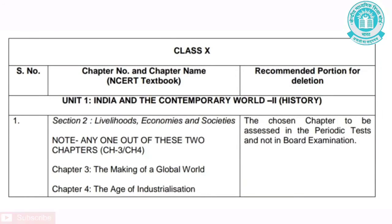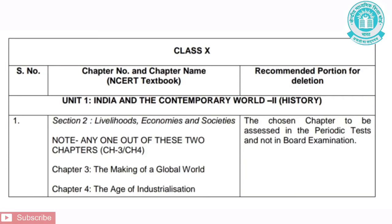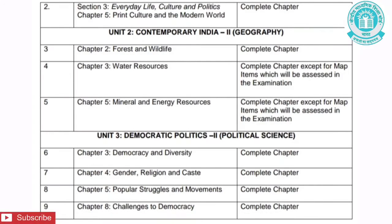The next subject is Social Science for Class 10. Unit 1 is India and the Contemporary World 2 — History. Section 2 is Livelihoods, Economies and Societies, which includes two chapters: The Making of a Global World, and The Age of Industrialisation. These chapters will be assessed in Periodic Tests only, not in the Board Examination. Section 3 is Everyday Life, Culture and Politics — Chapter 5, Print Culture and the Modern World. This complete chapter has been removed.